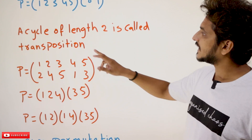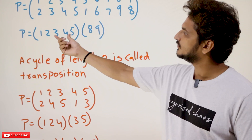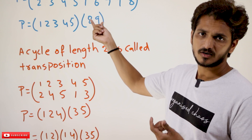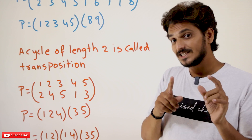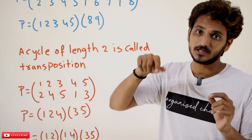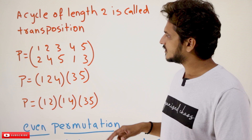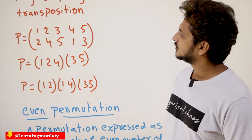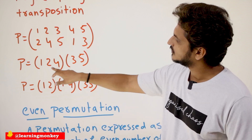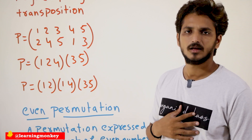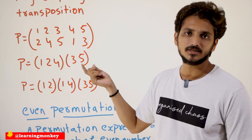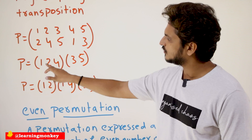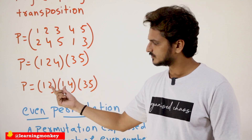We need to understand the concept of a cycle. A cycle of length 2 is called a transposition. Any cyclic representation can be expressed in the form of transpositions. For example, the permutation P: 1→2, 2→4, 4→3, 5→4, 1→5, 3 can be written in cycles as (1 2 4)(3 5), and (3 5) is already a transposition. The cycle (1 2 4) can be written as transpositions: (1 2)(1 4).